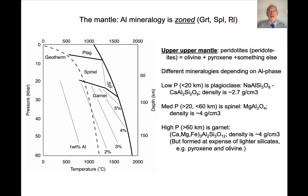The three key phases are garnet, spinel, and plagioclase. The upper part of the mantle consists of peridotites — ultramafic rocks that contain olivine, pyroxene, and an aluminous phase. At low pressures, less than 20 kilometers, the aluminous phase is plagioclase — a solid solution between albite and anorthite — low density. At intermediate pressures, the aluminous phase is spinel, dominantly MgAl2O4, with a pretty high density. And at higher pressures, the aluminous phase is garnet.